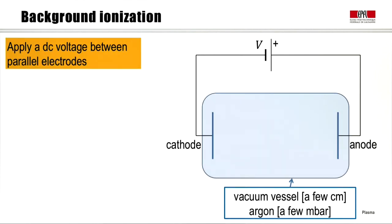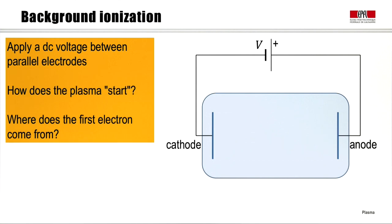As an example, we will take a vacuum vessel here with electrodes of a few centimeters dimensions, and the vessel is filled with argon to a pressure of a few millibars. We will apply a DC voltage between a cathode and the anode. And the question is, does a plasma form immediately? That is, how does the plasma start, or where does the first electron come from to start the plasma?